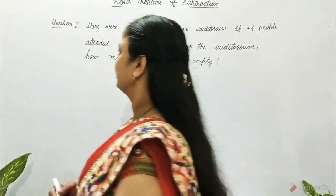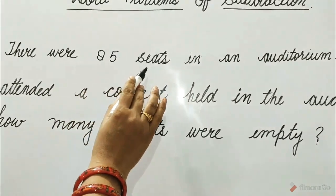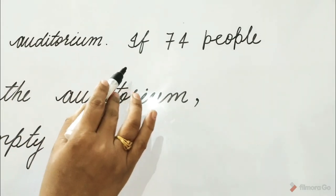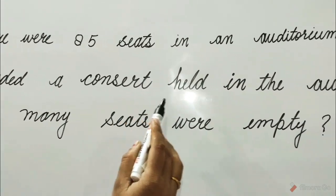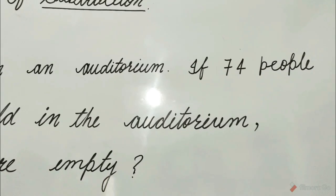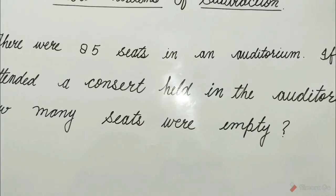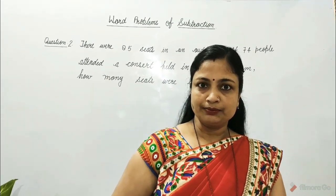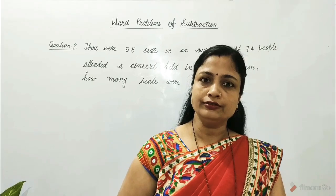Question number two. There were eighty-five seats in an auditorium. If seventy-four people attended a concert held in the auditorium, how many seats were empty? To find the number of empty seats, we will subtract the people who attended the concert from the total number of seats.